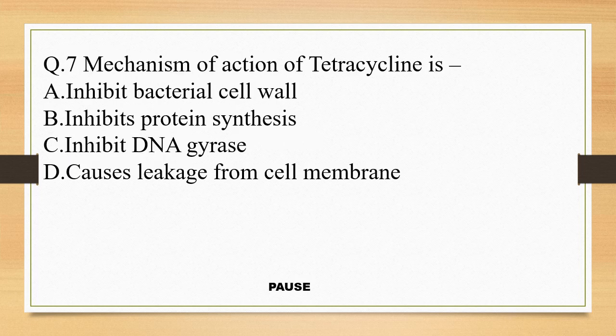Question 7. Mechanism of action of tetracyclines is: option A, inhibit bacterial cell wall; option B, inhibit protein synthesis; option C, inhibit DNA gyrase; and option D, it causes leakage from cell membrane. And the right answer is option B, inhibit protein synthesis.